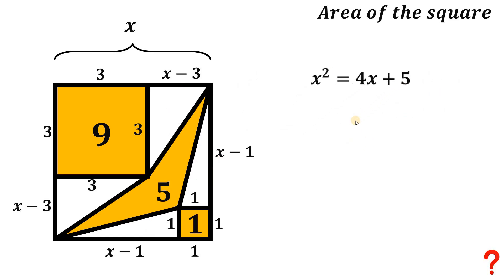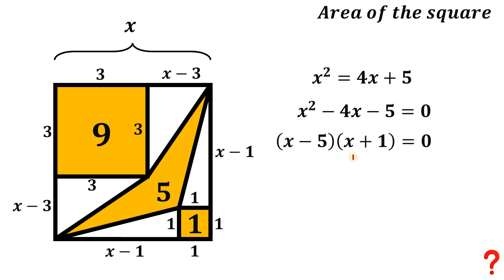Let's focus on this quadratic equation. Equating to 0, we have x squared minus 4x minus 5 equals 0. This is not hard to factor. Factoring it out, we have x minus 5 multiplied by x plus 1 equals 0. Since it equals 0, at least one factor must equal 0. So x minus 5 equals 0 gives x equals 5, and x plus 1 equals 0 gives x equals negative 1.